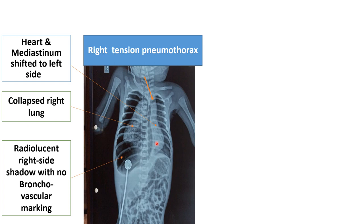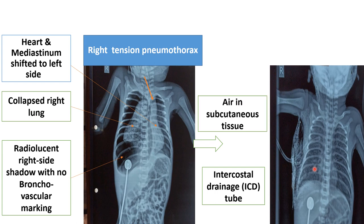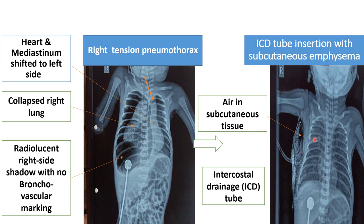Whenever there is mediastinal shift, as in this case where the mediastinum is shifted toward the opposite side, we label it as tension pneumothorax. The diagnosis for this x-ray is right-sided tension pneumothorax. After ICD insertion, the lung is inflated well and there is air in the subcutaneous tissue — iatrogenic subcutaneous emphysema. Diagnosis: ICD insertion for pneumothorax with subcutaneous emphysema.